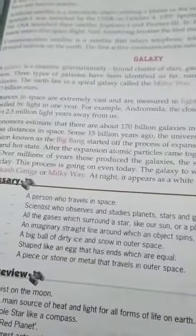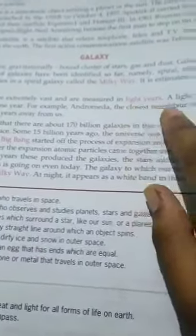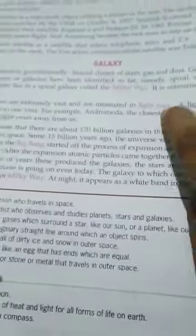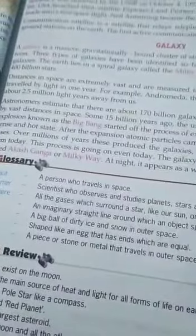Distances in space are extremely vast and are measured in light years. Light year is the distance travelled by light in one year. How much distance a light covered in one year, that is the light year.